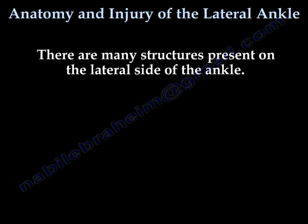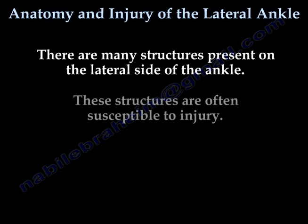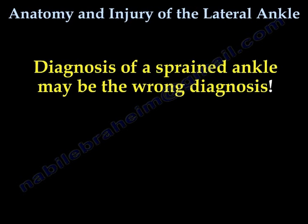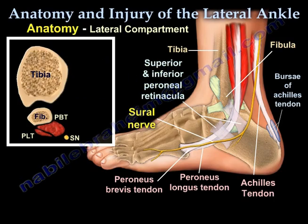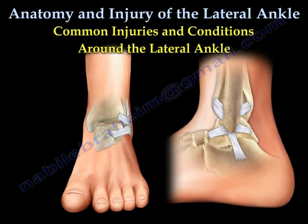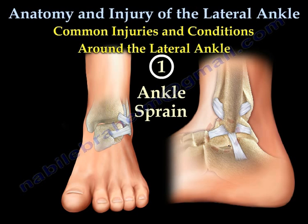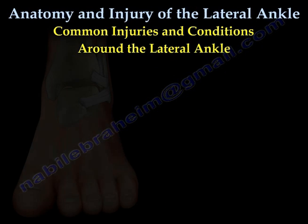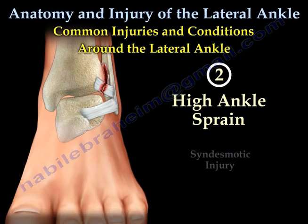There are many structures present on the lateral side of the ankle, and these structures are often susceptible to injury. The diagnosis of these injuries can be confusing, and many of these injuries can be missed. Diagnosis of a sprained ankle may be the wrong diagnosis. The first type is an ankle sprain. The second type is a high ankle sprain, or a syndesmotic injury.